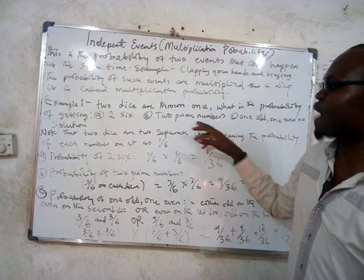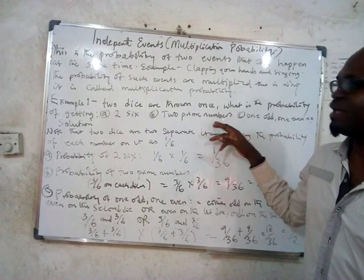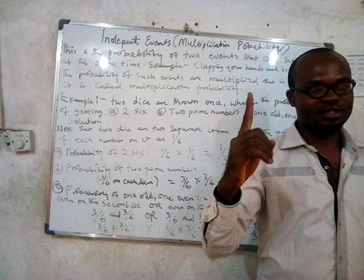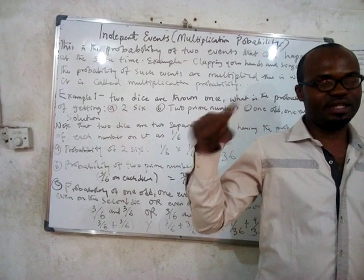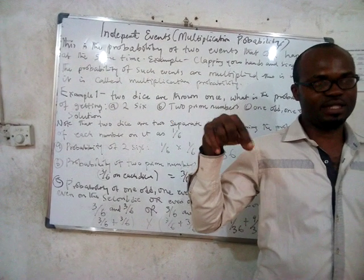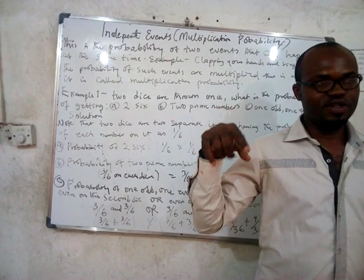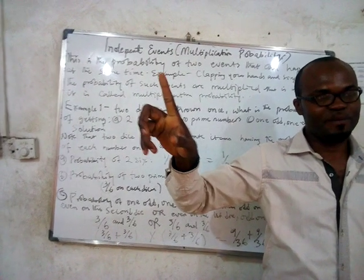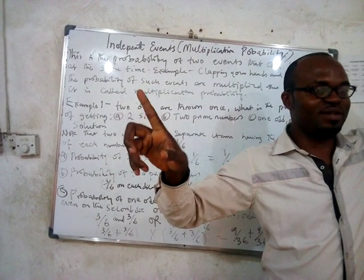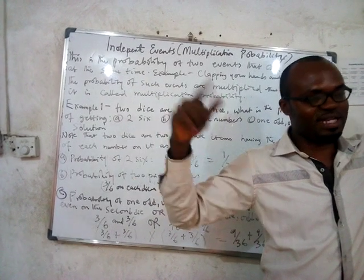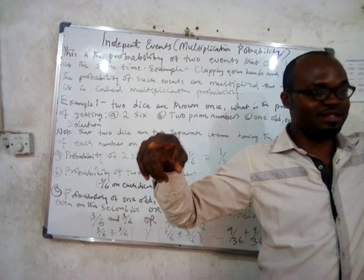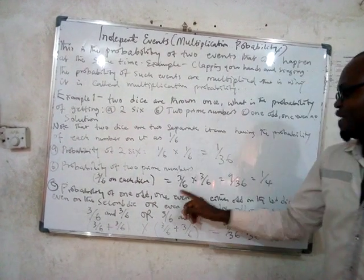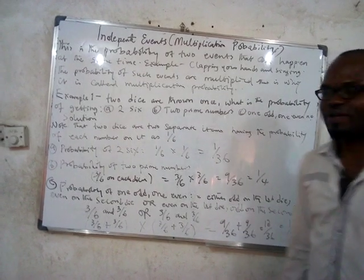Now, what is the probability of getting two prime numbers? How many prime numbers are on a die between one and six? There are three prime numbers: 2, 3, and 5. So the probability of getting a prime number on one die is 3/6. The probability of getting a prime number on the other die is also 3/6. So we have 3/6 times 3/6, which gives us 9/36, which is equal to 1/4.